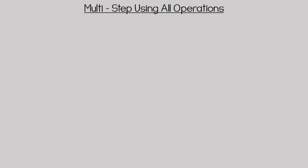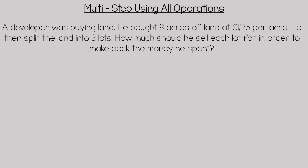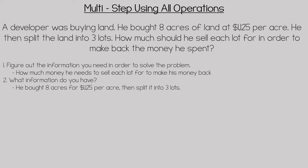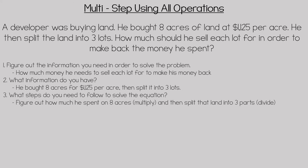This word problem is an example of a multi-step word problem using all operations. A developer was buying land. He bought eight acres of land for $1,125 per acre, then split the land into three lots. How much should he sell each lot for in order to make back the money he spent? First, we identify the information we need: how much money he needs to sell each lot to make his money back. We know he bought eight acres for $1,125 per acre and split it into three lots. The steps are: multiply to find how much he spent, then divide to split it into three parts.